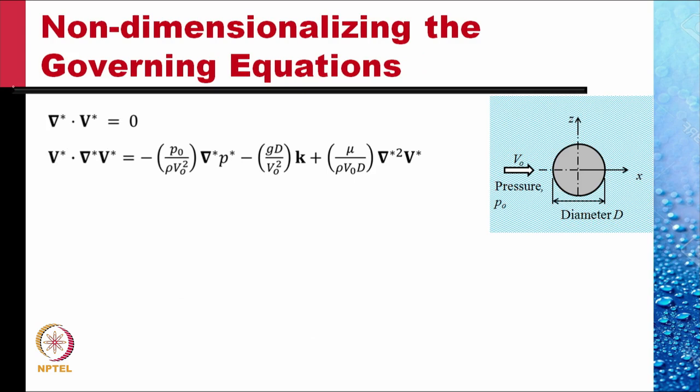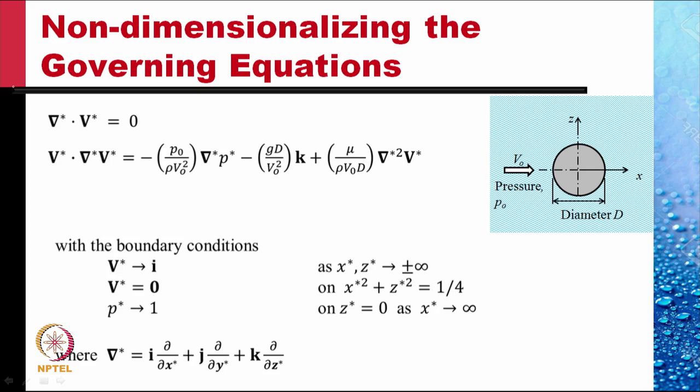These are the governing equations for incompressible steady flow. In normalized form they look like: ∇* · v* = 0, which is the continuity equation (mass balance equation). For steady flow, the Navier-Stokes equation in its normalized form reduces to: v* · ∇*v* = −(p₀/ρv₀²) ∇*p* − (gd/v₀²) k̂ + (μ/ρv₀d) ∇*²v*, where ∇* = (∂/∂x*)i + (∂/∂y*)j + (∂/∂z*)k.